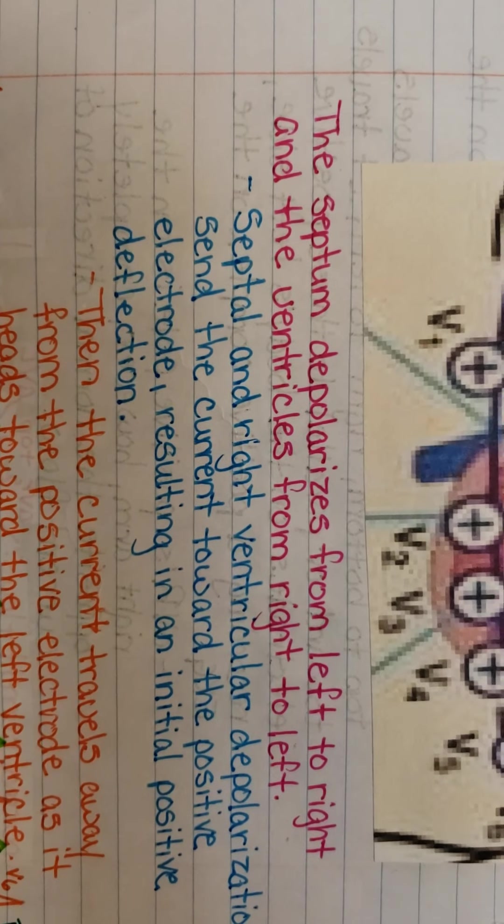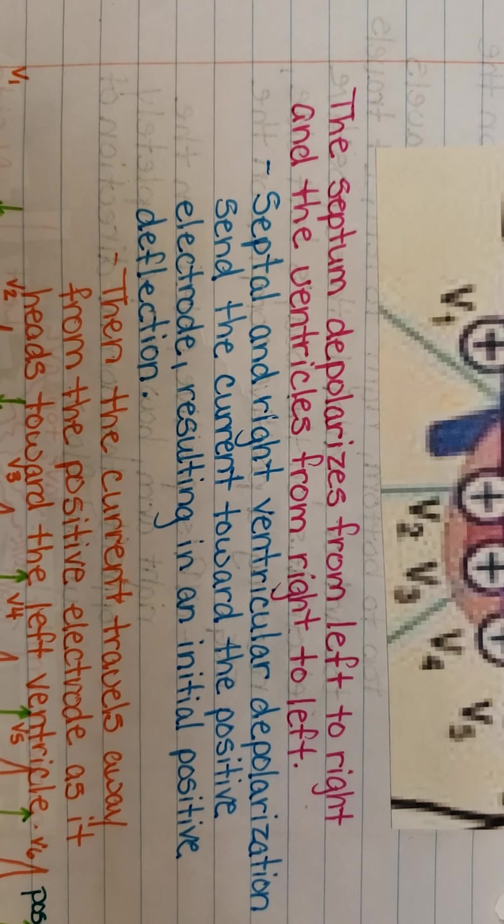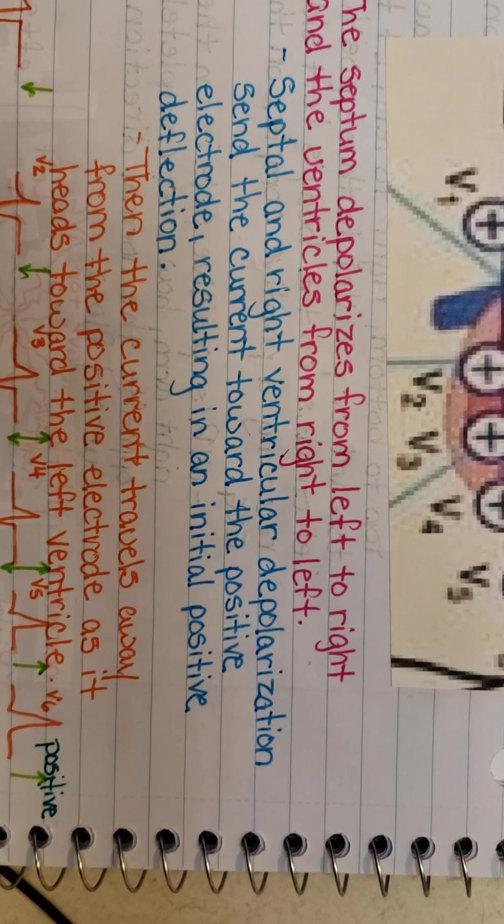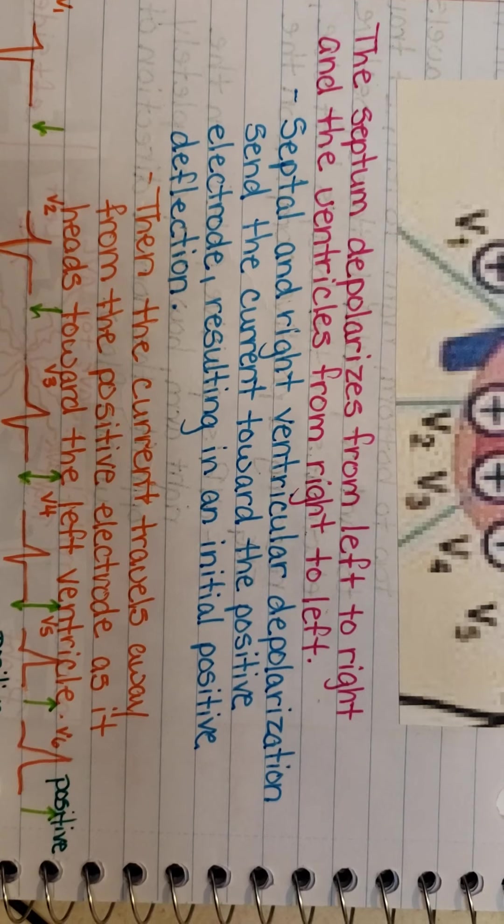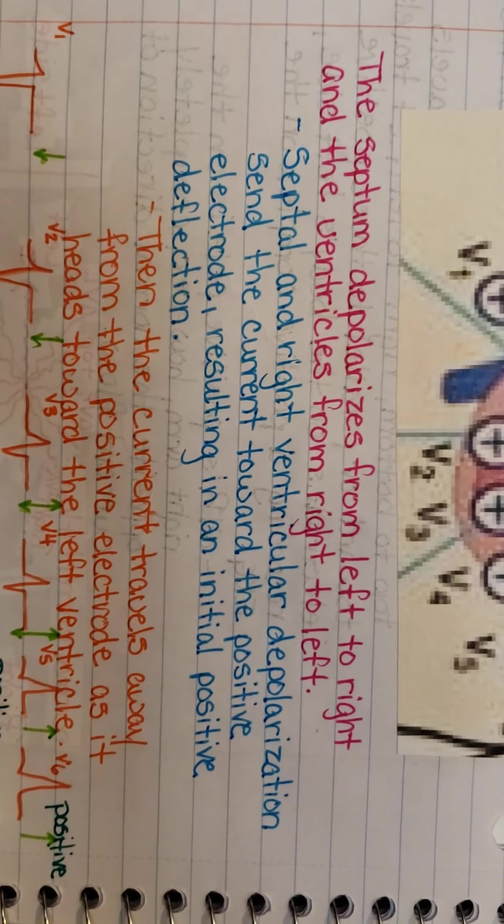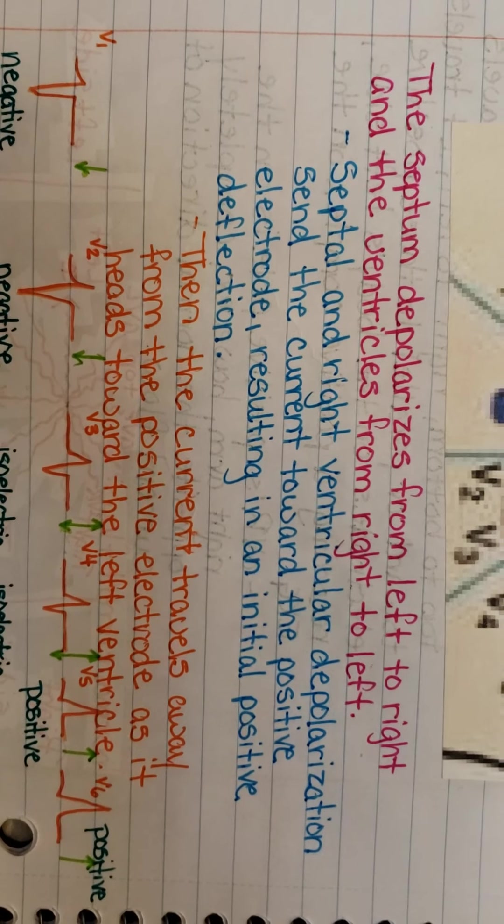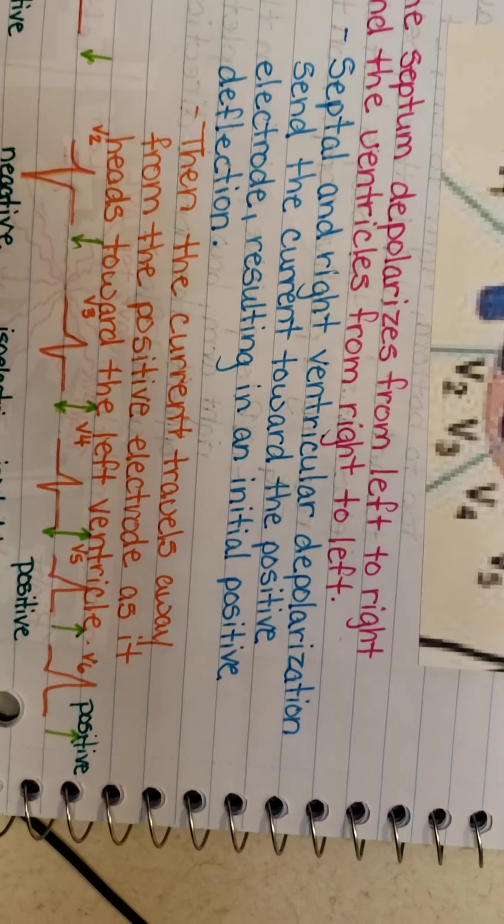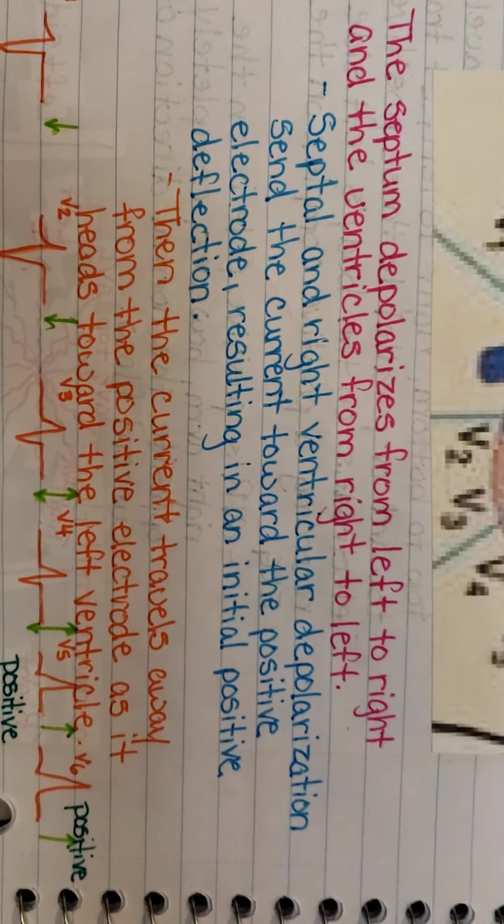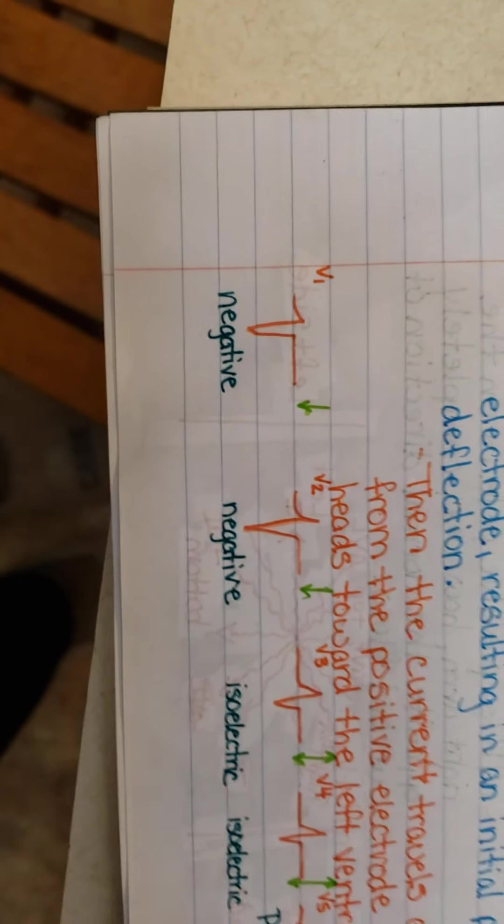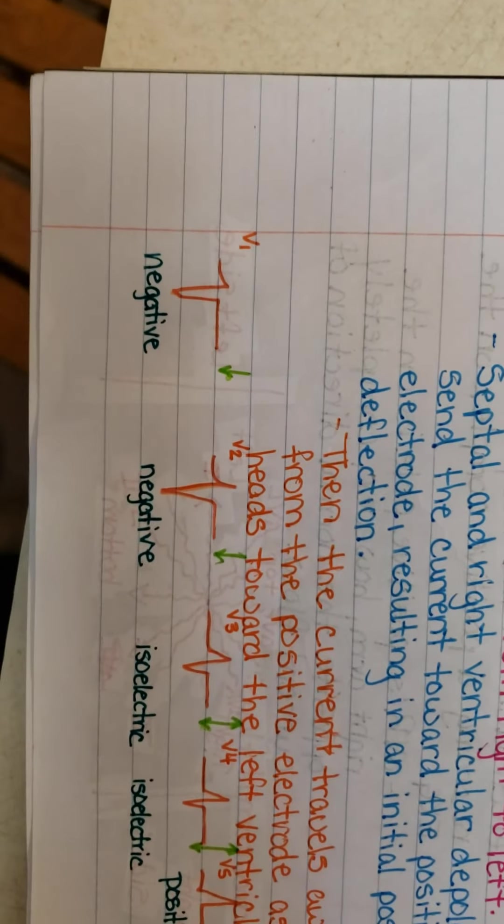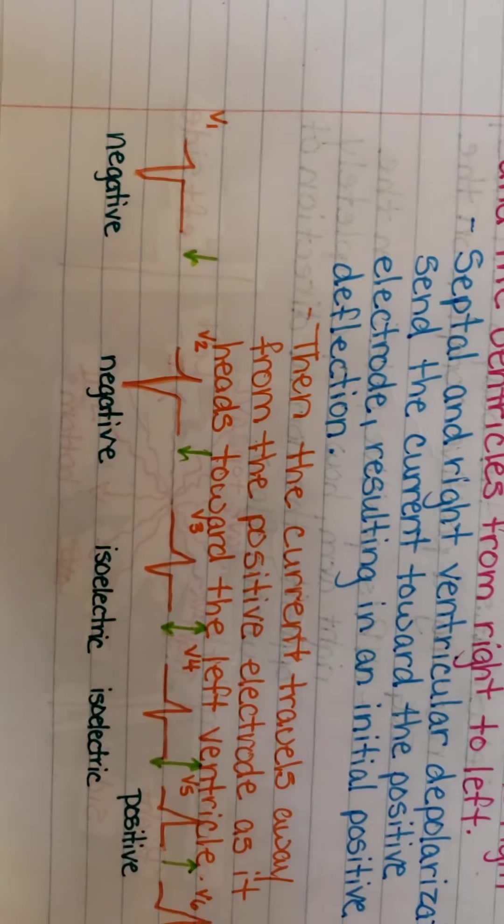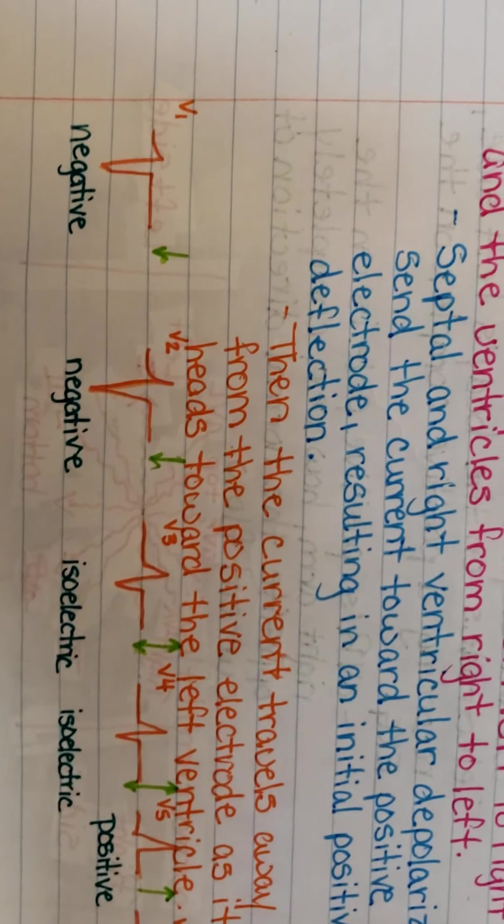So, the septum depolarizes from the left to right and the ventricles from right to left. Septal and right ventricular depolarization send the current toward the positive electrode, resulting in an initial positive deflection. Then, the current travels away from the positive electrode as it heads toward the left ventricle. Hence why V1, as you can tell, the current is going away from the positive pole, so therefore it writes a negative QRS. Same thing with V2. It's going away from the positive pole.